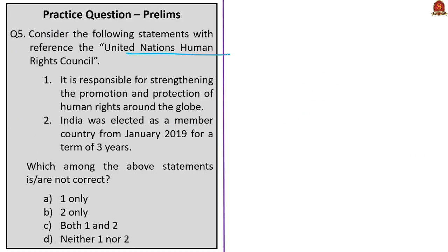This question is with reference to the United Nations Human Rights Council. Two statements are given, and we are asked which are NOT correct. The first statement: it is responsible for strengthening the promotion and protection of human rights around the globe. We know this statement is correct, and since they are asking which statements are NOT correct, statement one should not be in the answer.